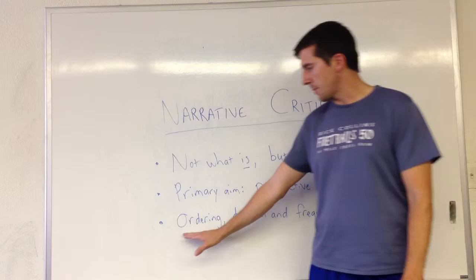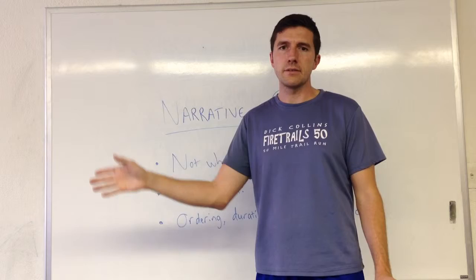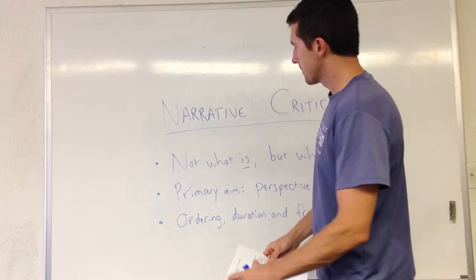First of all, when we're reading narratives, we have to ask about such things as the ordering of events. The way in which events are ordered, A, B, C and so forth, is a method of interpreting events. So what I mean is this.